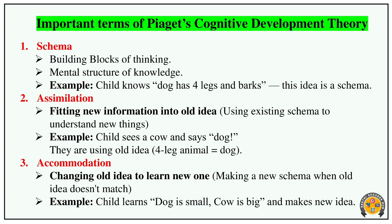Accommodation means changing the existing schema when new information doesn't fit. When the child realizes the cow and dog are different — the dog is small and the cow is big — they must change their schema. That change is accommodation.